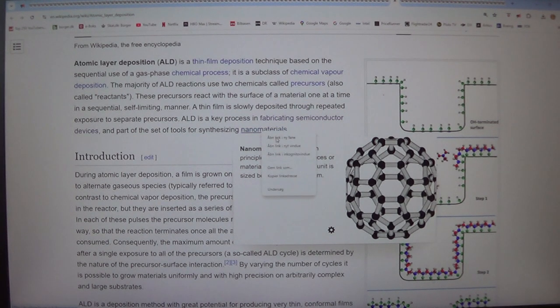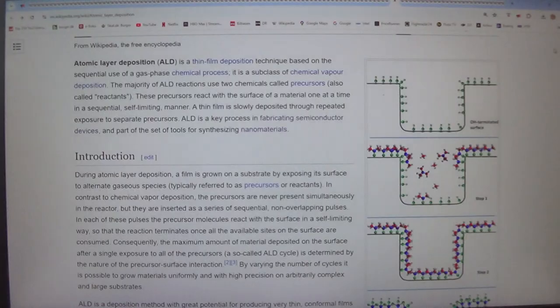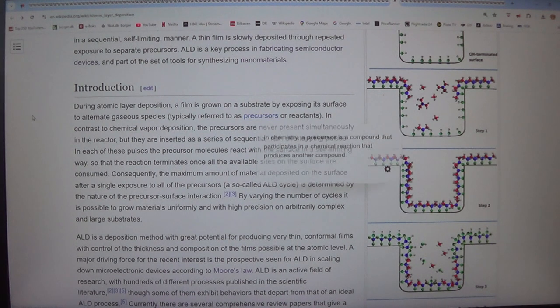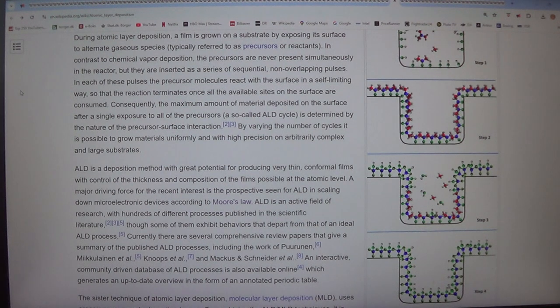Introduction. During atomic layer deposition, a film is grown on a substrate by exposing its surface to alternate gaseous species, typically referred to as precursors or reactants. In contrast to chemical vapor deposition, the precursors are never present simultaneously in the reactor, but they are inserted as a series of sequential, non-overlapping pulses. In each of these pulses the precursor molecules react with the surface in a self-limiting way, so that the reaction terminates once all the available sites on the surface are consumed.